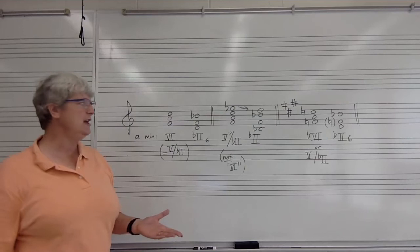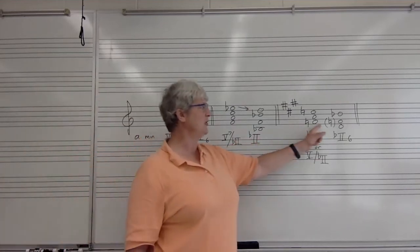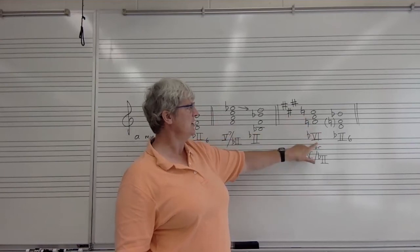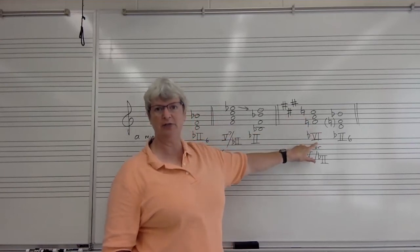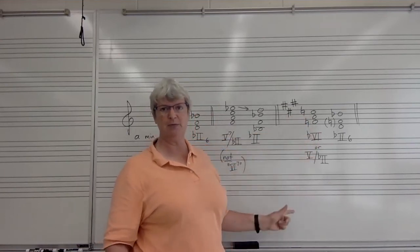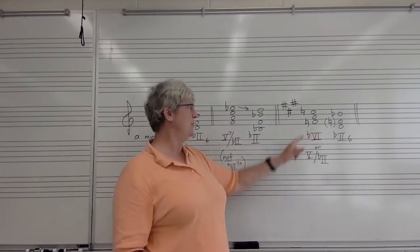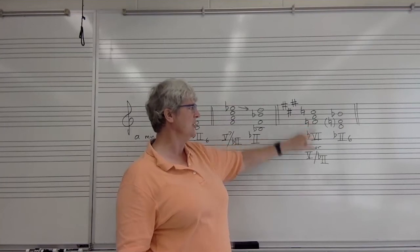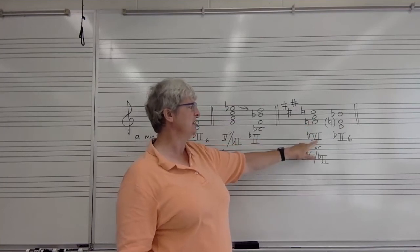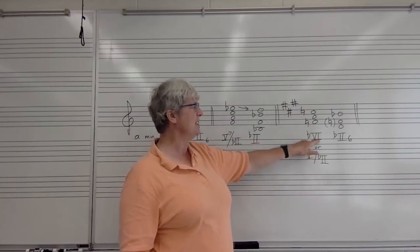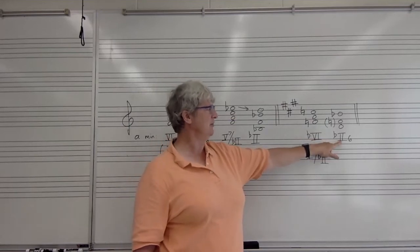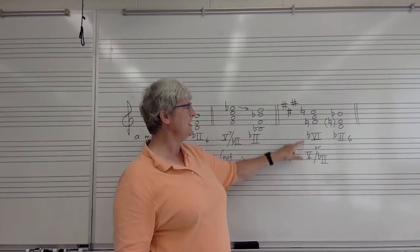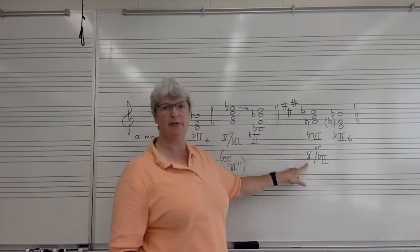In a major key, we can have the same chord progression, except now instead of calling this chord 6, it's a mode mixture chord, and we call it flat 6. It's the same chord, but it's not built on the regular scale degree 6 in A major, so we call it flat 6. So flat 6 in a major key is the dominant of flat 2-6 or flat 2, and we can call this chord either flat 6 or we can call it 5 of flat 2.